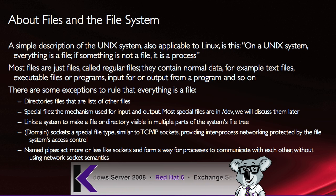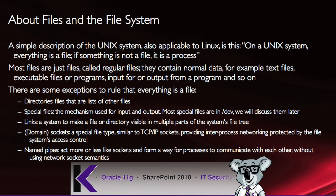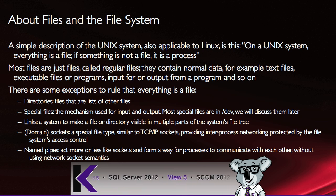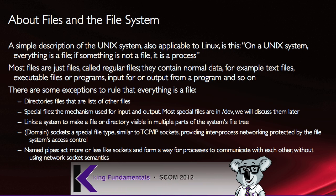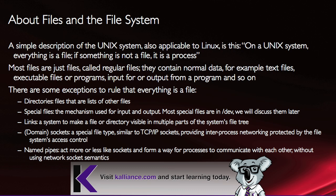There are some exceptions to this rule. There are directories, which are files that are lists of other files — yes, directories in Linux are files. There are also special files, which are a mechanism used for input and output. Most special files are in the dev directory, and we'll talk about those later. And there are links, which is a system of making a file or directory visible in multiple parts of the file system.